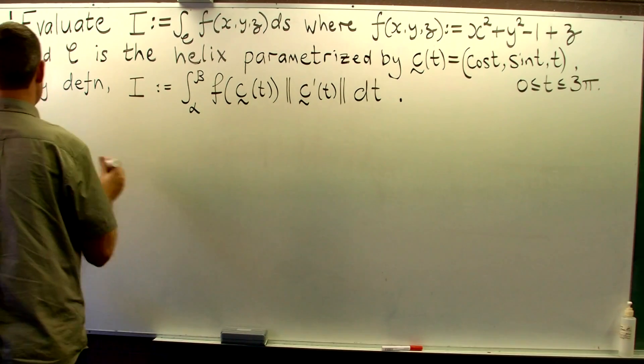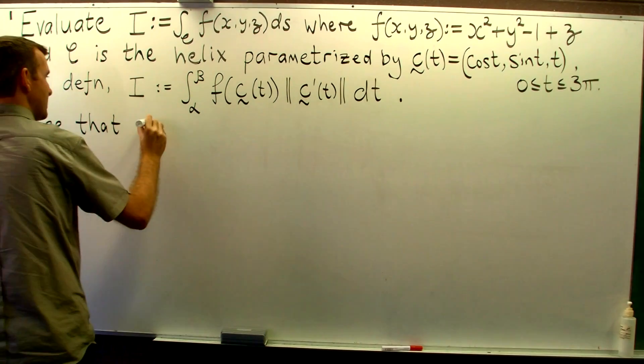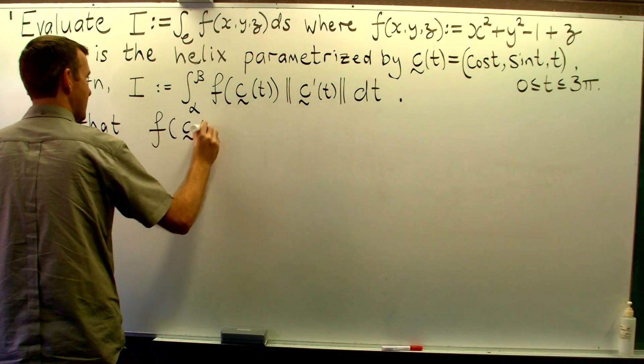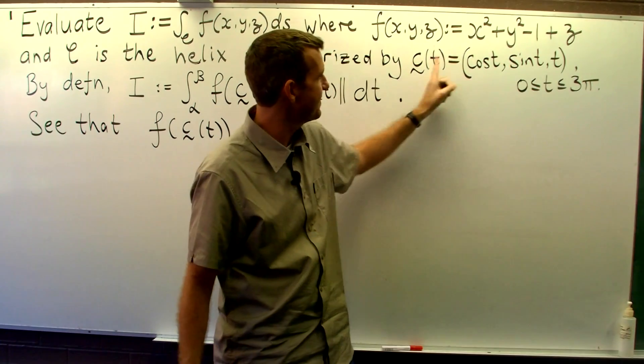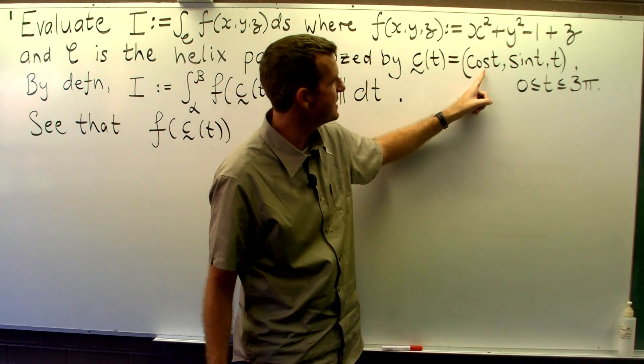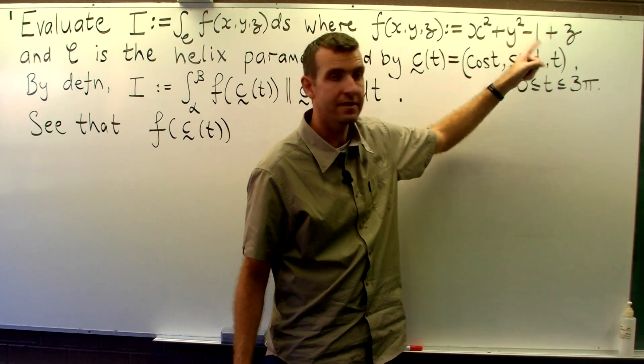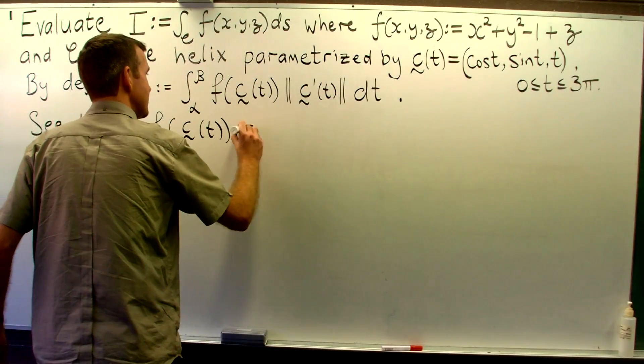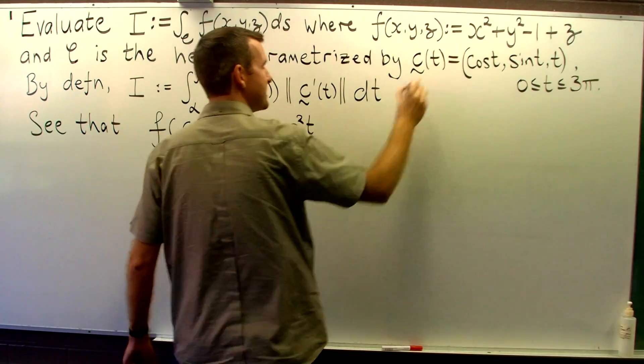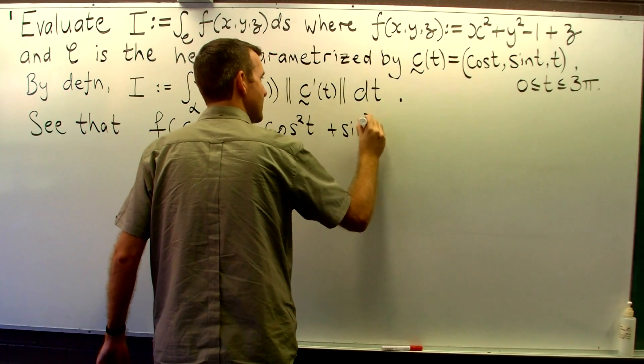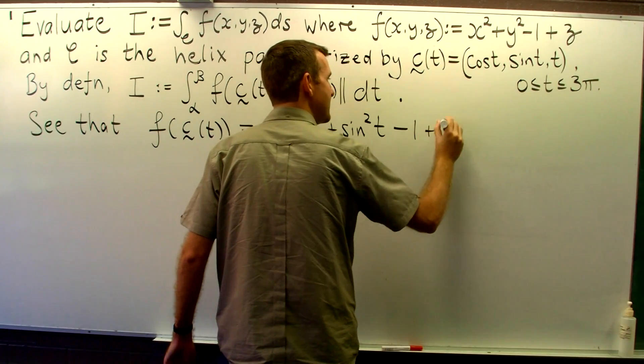Alright, so let's get this part first. F evaluated along our parameterisation. So what we do is we go to our vector function c and substitute in cos t for x into f, sin t for y into f and t for z in f. So the first part is going to become cos squared t. The second part is going to become sine squared t. And the final part is just going to become t.